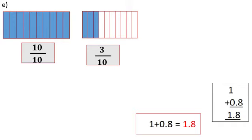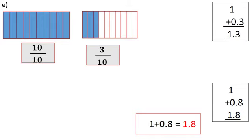We got 10 by 10 and 3 by 10. Add them: 10 by 10 means 1. Plus 3 by 10 means 0.3. First fraction is 10 by 10, that is 1. Next, 3 by 10 is 0.3 in decimal. Add the whole number with decimal number: 1 plus 0.3 equals 1.3.